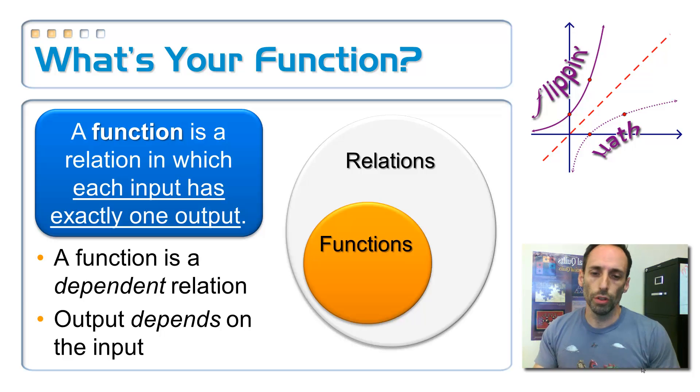In this little Venn diagram, you have on the outside all the relations, and on the inside of that, a subset are the functions, showing you that every single function is a relation, but not every single relation can be a function. It's a little bit more strict. Sure, it's a relation, so I'm pairing up two numbers, but how am I pairing it? I'm pairing it so that every input has just one output.